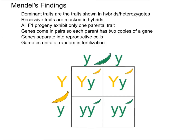It's also important to remember that Mendel discovered that all the F1 progeny — the offspring here — exhibit only one parental trait. So that means if you have a green pea mated with a yellow pea, you're not going to get a completely different color; you're either going to get green or yellow, as you can see down here.